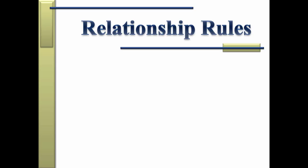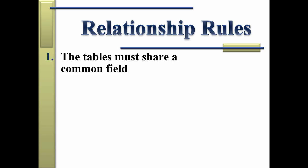Relationship rules. Basically, a relationship is simply a communication path between tables. It's set up so that multiple tables can talk to one another. But in order for that communication to take place, the tables that have to talk to one another have to share a common field.